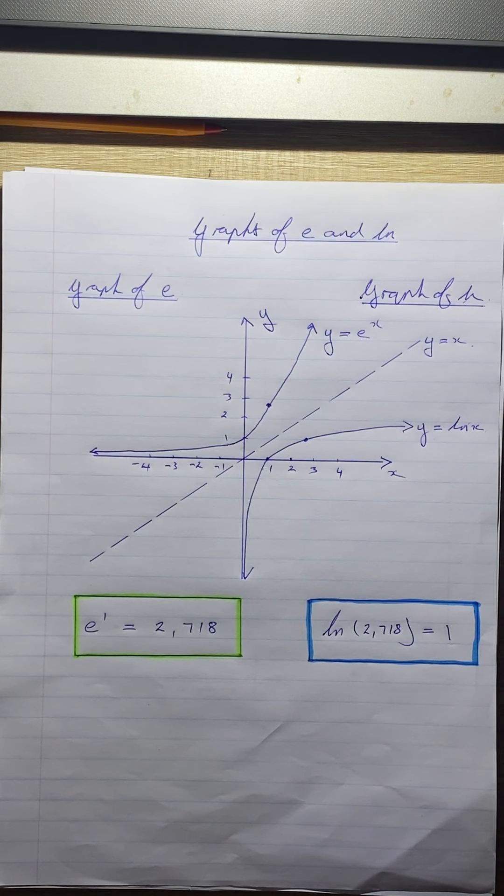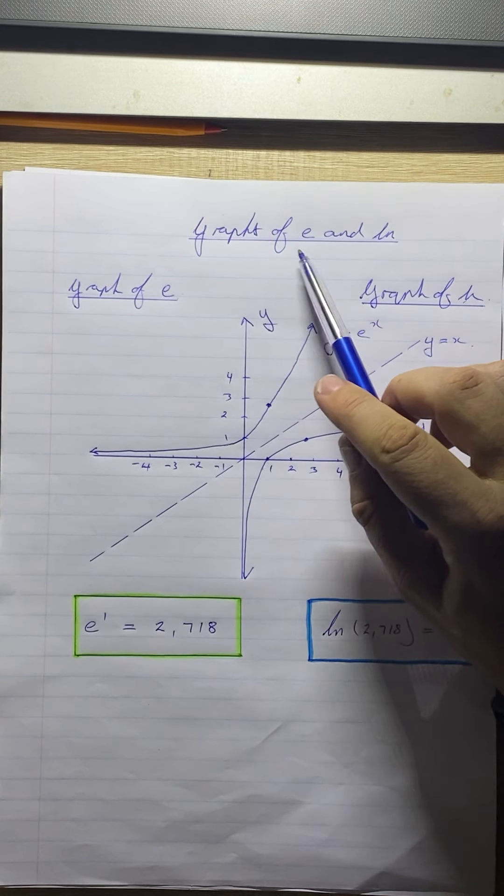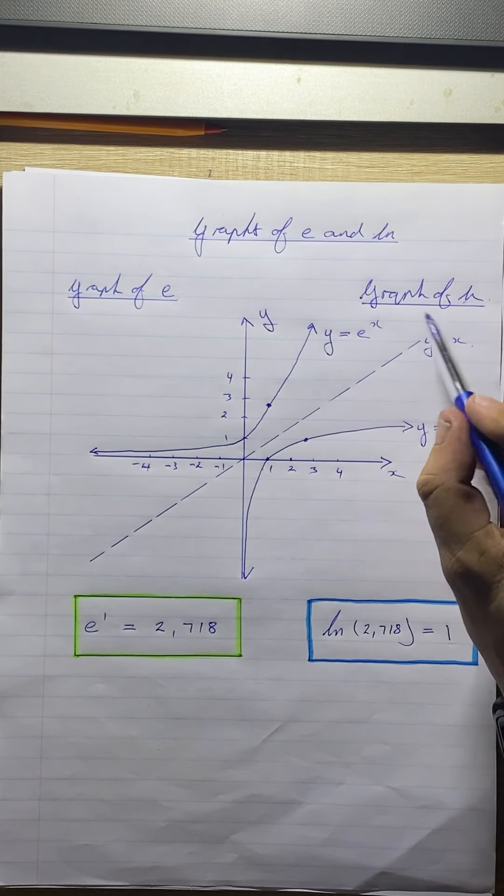We're moving on to the graph of ln. So here it is. Now I want you to notice the relationship between these two, the e^x and the ln(x).